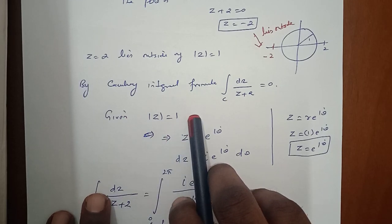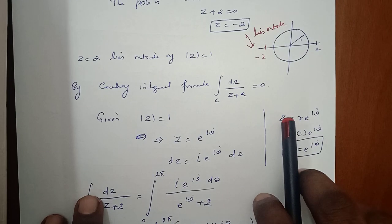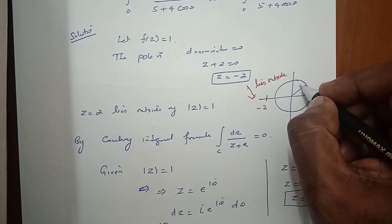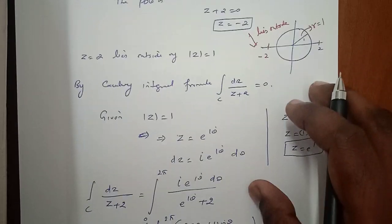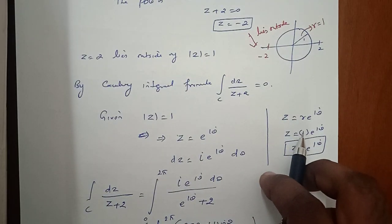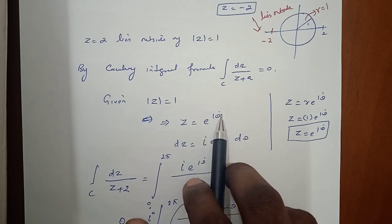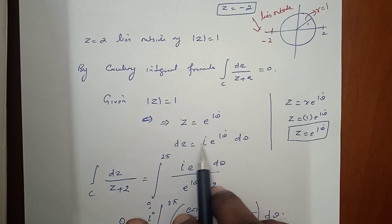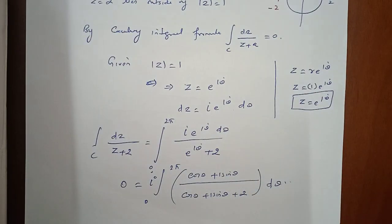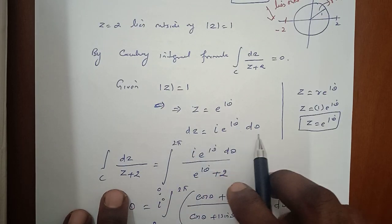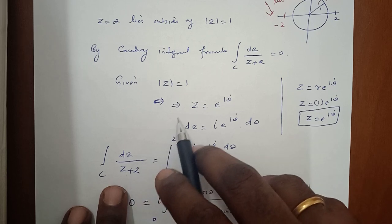Given that modulus of z equals 1, we use the polar form z = re^(iθ). Since the radius value is 1, we substitute r = 1, giving z = e^(iθ). Differentiating, dz = ie^(iθ) dθ. So the integral over the closed curve of dz/(z + 2) equals the integral from 0 to 2π of ie^(iθ) dθ divided by (e^(iθ) + 2), since 0 to 2π represents a complete circle.